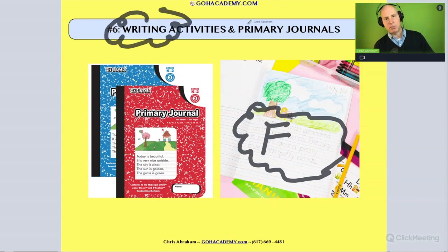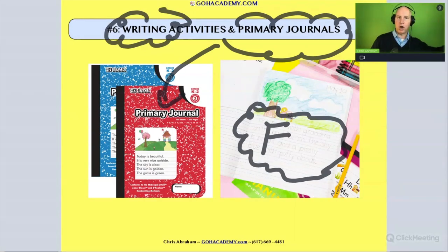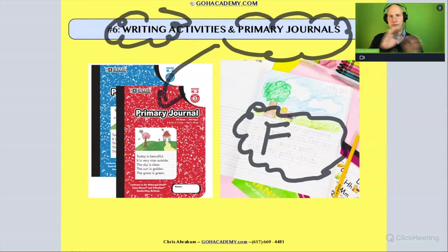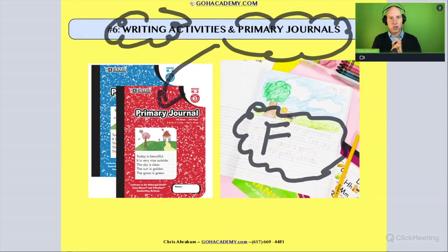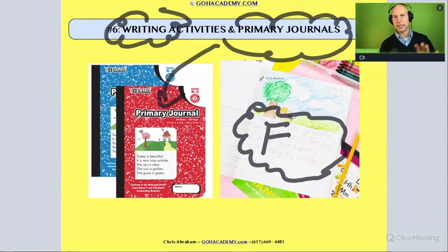Writing activities using a primary journal — like something like this right here — you've seen these in early education, where they allow the child to draw and write. They're really helpful because they allow for a lot of flexibility for students at different levels of writing, whether they're at the preliterate, emergent, transitional, or fluent stage. The child can draw a picture and write, or just draw. These do a really good job of supporting all those groups of students.